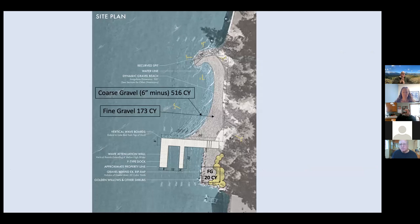Looking down in plan view you can see these little gravel spits. If you remember the picture with the aquatic insect counts, you build one of these and you just have little ecological hot spots. It's a way to compartmentalize within property boundaries.